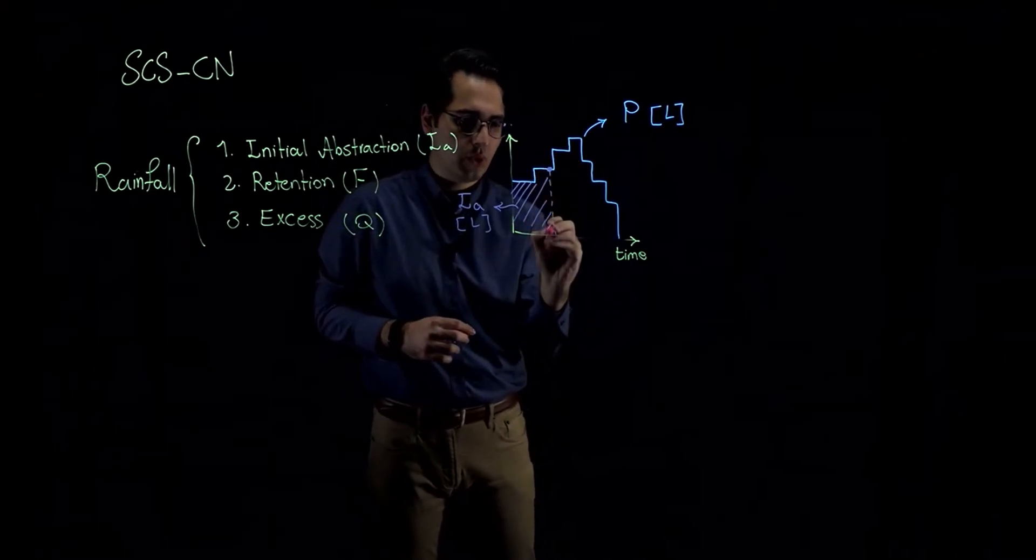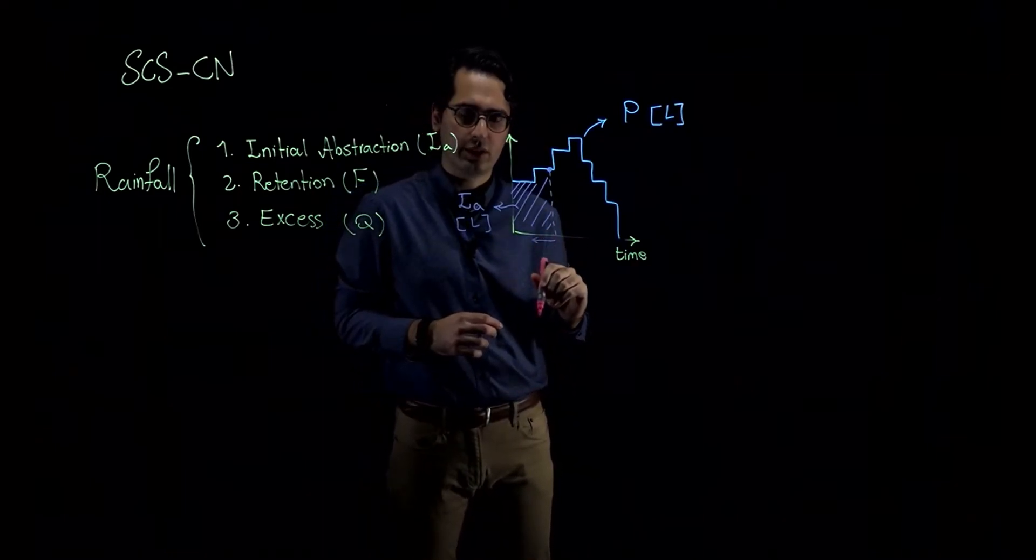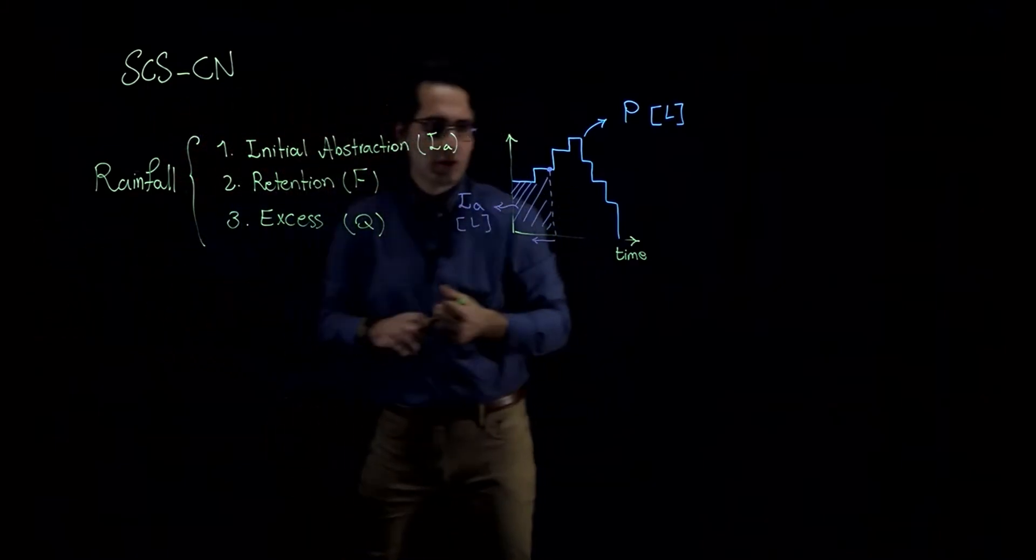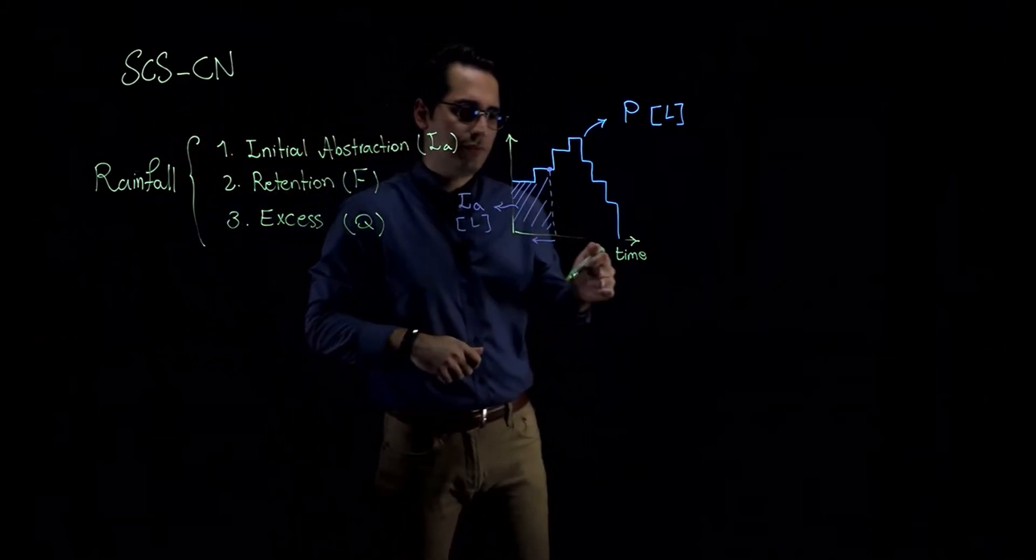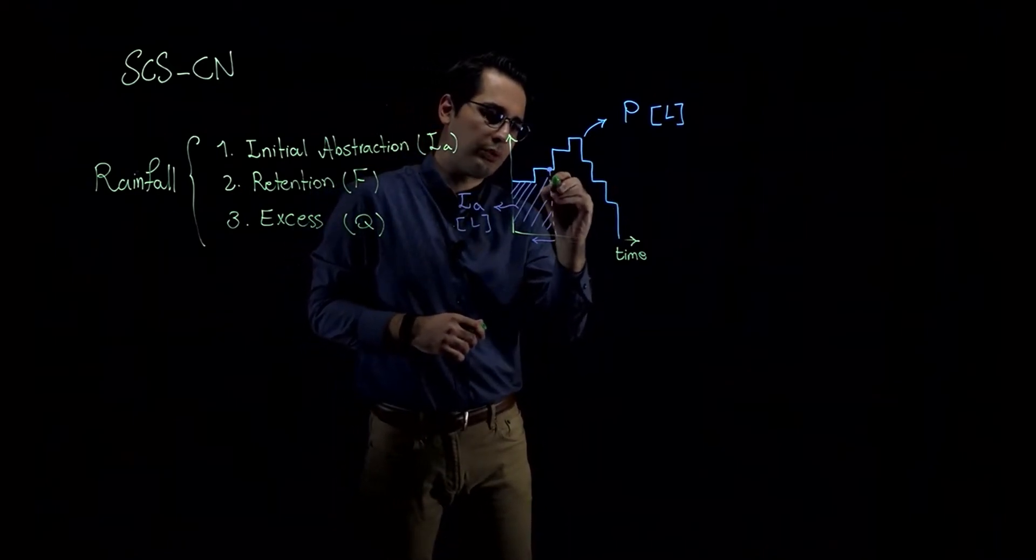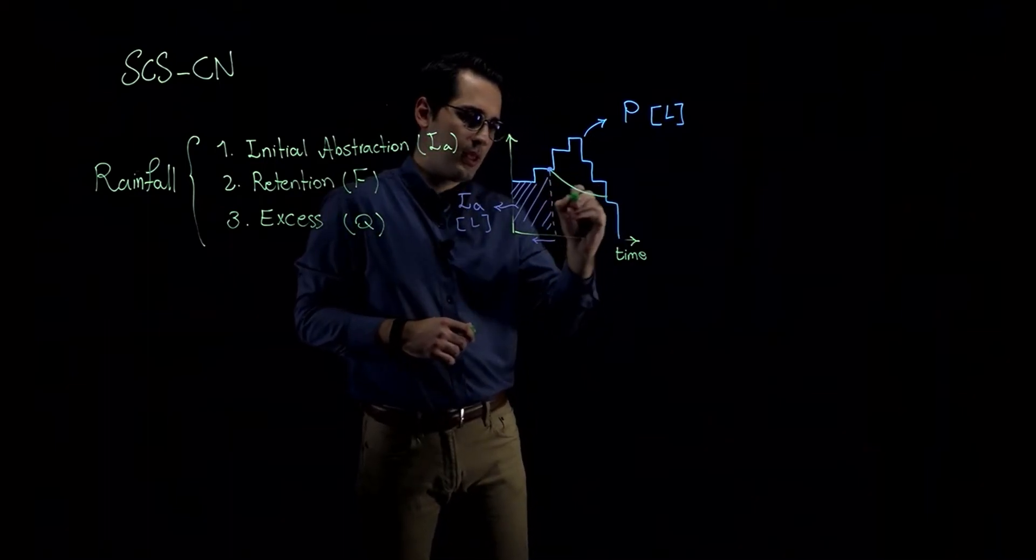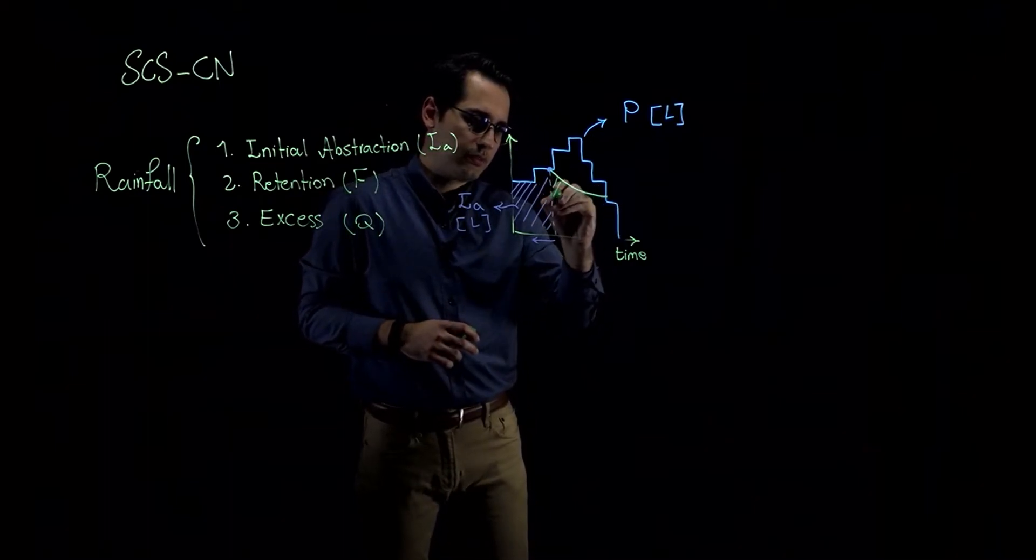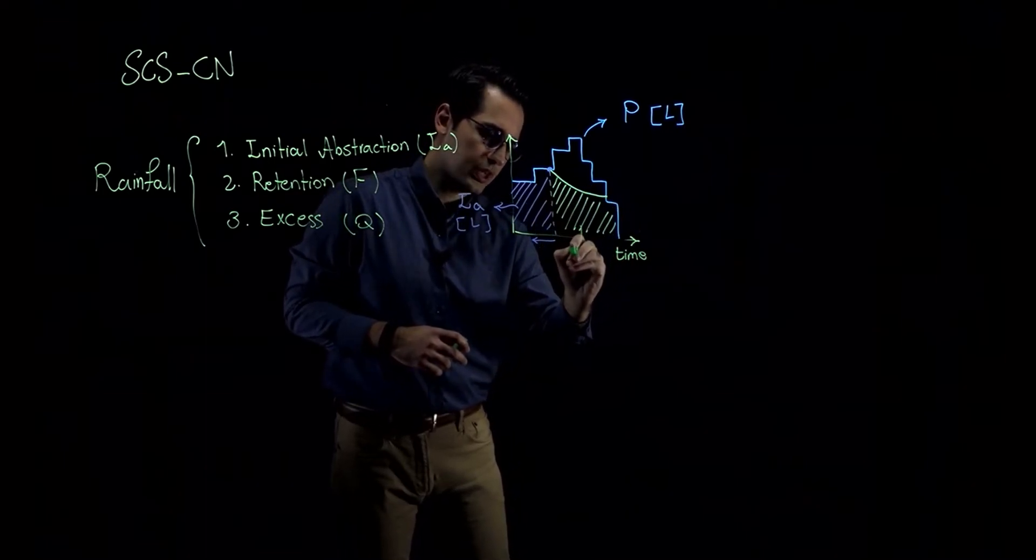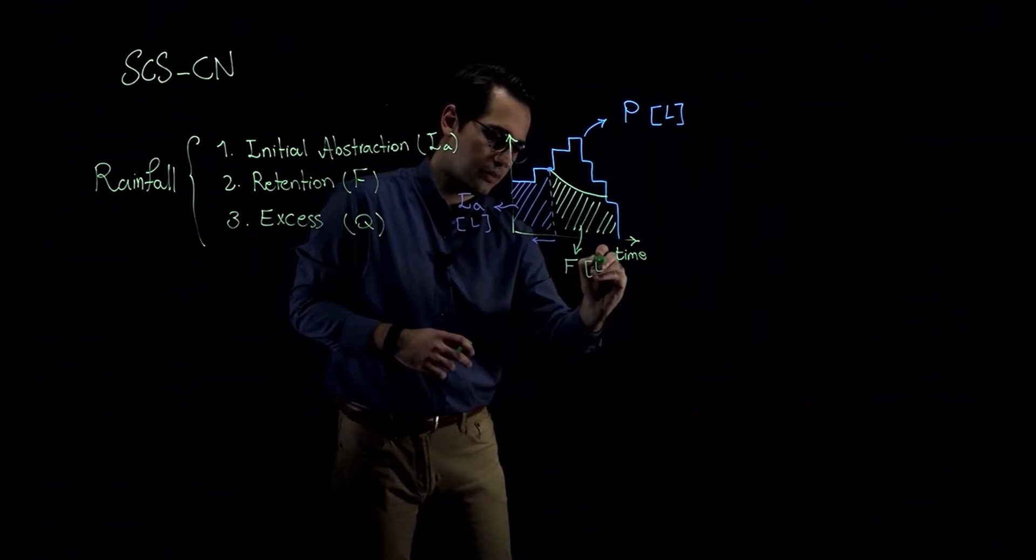Now, to show you the infiltration capacity curve or potential infiltration, this would be the curve. Below this curve, this polygon represents capital F or retention, again, units of length, millimeters, centimeters, or inches.